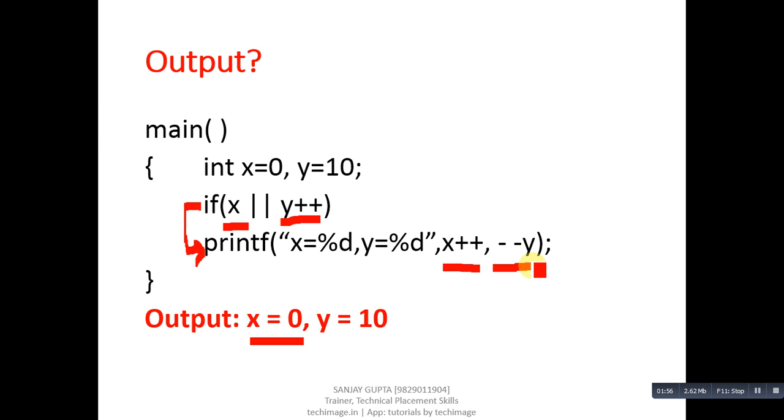Then minus minus Y - it is pre decrement. So here value of Y is 11, so minus minus Y means 11 again becomes 10, so Y will print 10 on console. In case of post increment, first value is printed then it is incremented. But in case of pre decrement, first value is decreased and then it is printed on console.